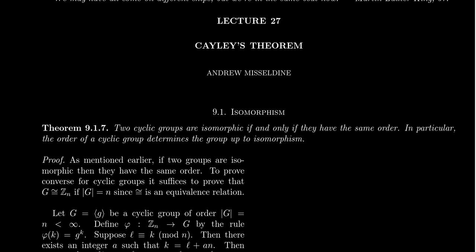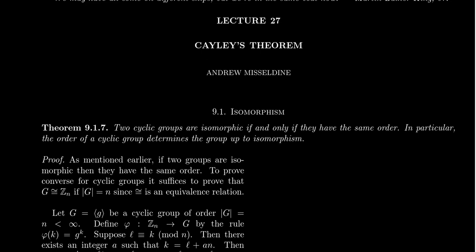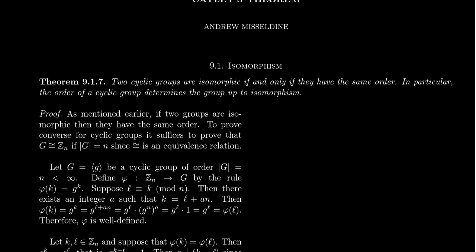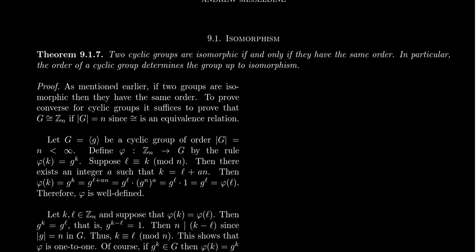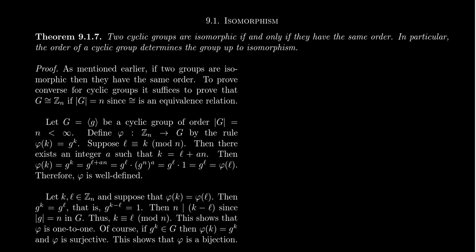So if we want to classify all the groups in the world, we just have to classify them up to isomorphism because different representations of the same group should really be considered the same thing. There are some types of groups where it's easy to classify them. The family of cyclic groups is very easy to classify. It turns out that cyclic groups will be unique up to their order. This is a statement I made in the previous lecture.